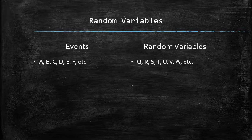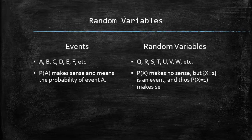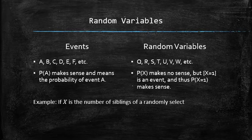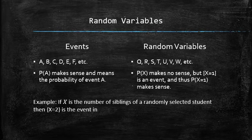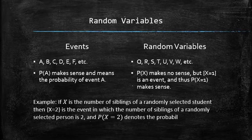When making probability statements, do not confuse the notation that we use for events with the one that we use for random variables. For example, if A is an event and x is a random variable, the probability of A does make sense, but the probability of x doesn't. In order to make a probability statement about a random variable, one must create an event first. For example, if x is the number of siblings of a randomly selected student, then x equals 2 is an event in which the number of siblings of a randomly selected person is 2. Now the probability of x equals 2 denotes the probability of such event.